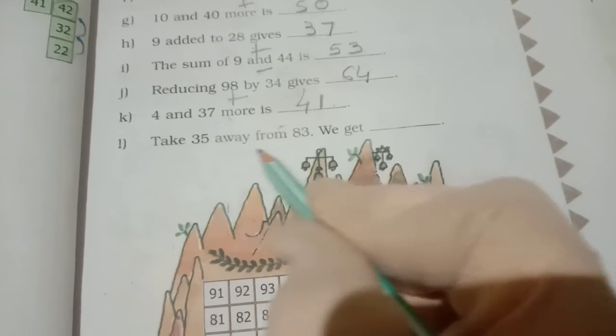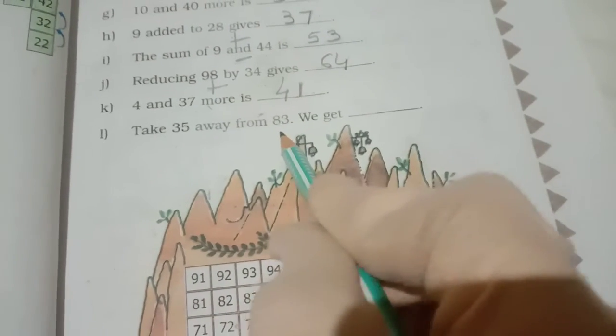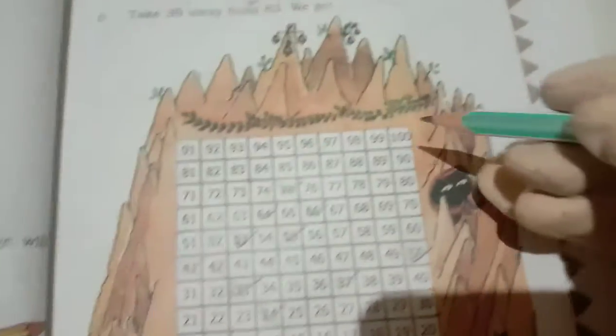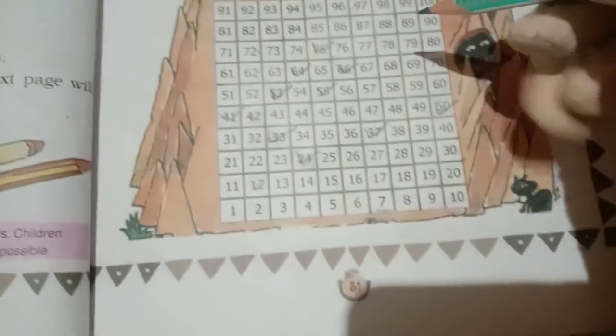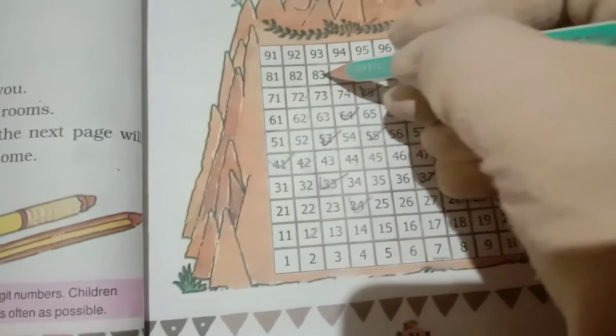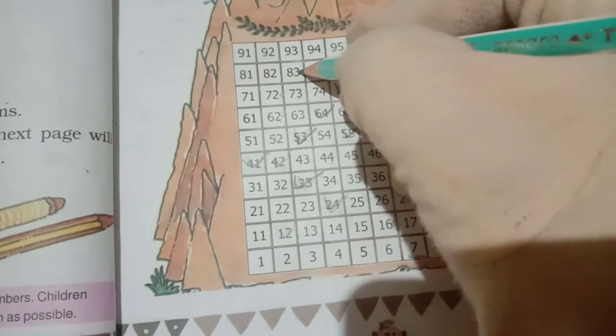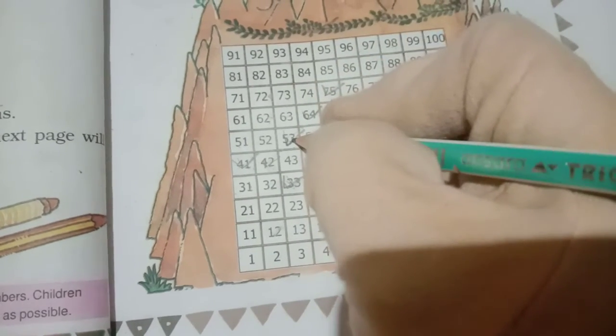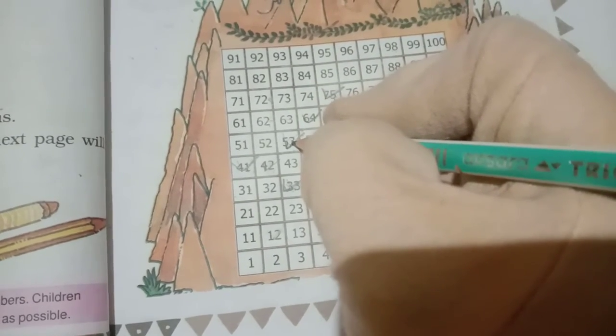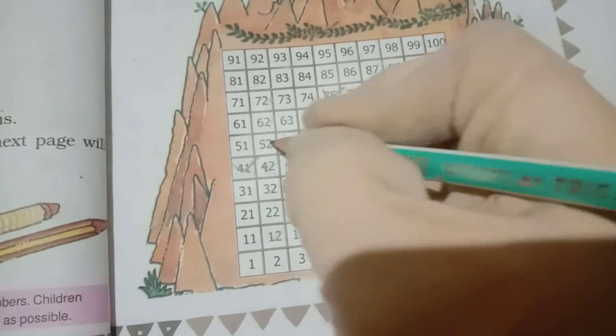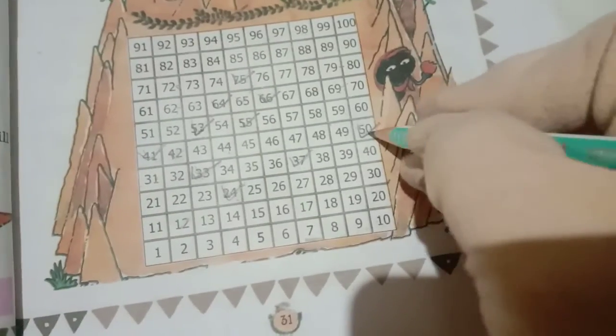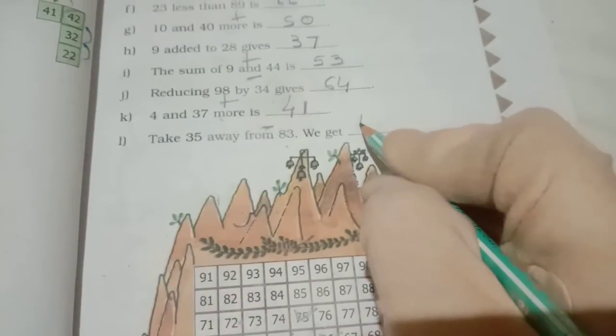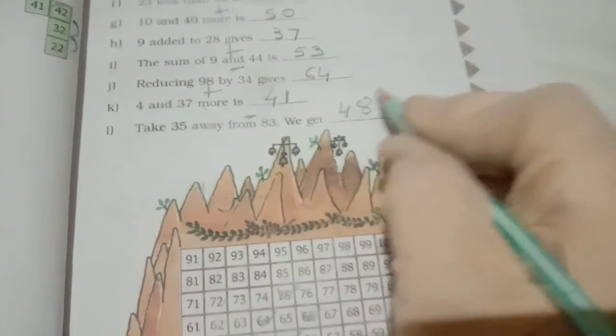Now take 35 away from 83. Take away means minus. 83 minus 35. So 83 is here. That 3 steps we have to go down. 1, 2, 3 means 53. Now 53 that 5 steps left side. 1, 2, 3, 4, 5. So answer will get 48.